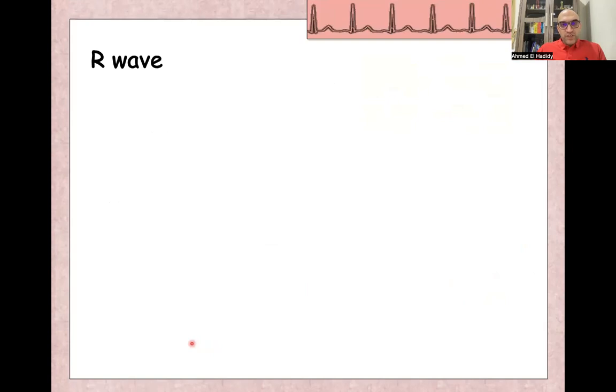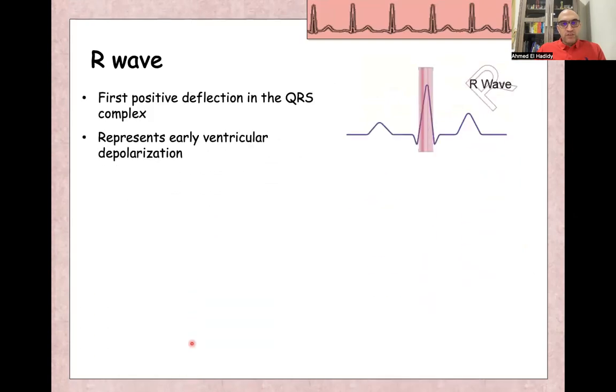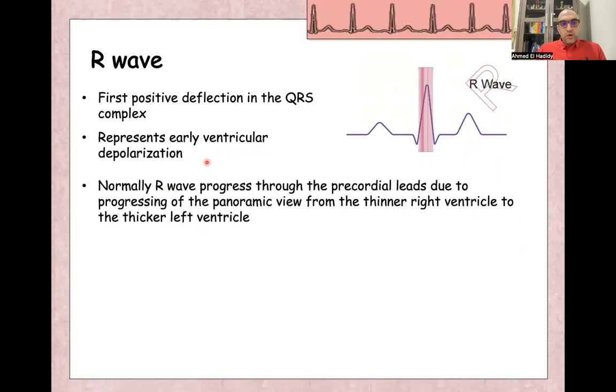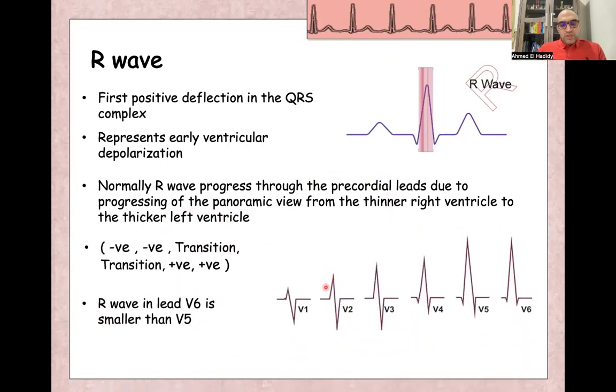R wave is the first positive wave in the QRS complex and it represents ventricular depolarization. Normal R wave progress from V1 to V6 because of panoramic view of the ventricles. So when moving from right lead, which is V1, towards the left lead or lateral lead of the V6, which is showing us the thicker left ventricle.